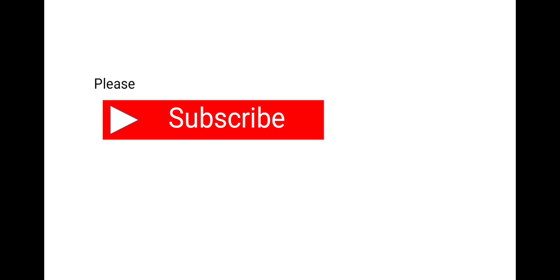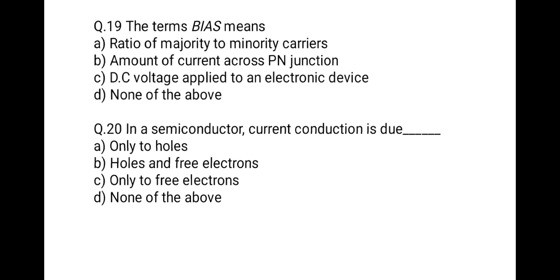The next question: in a semiconductor, current conduction is due to what? The correct option is holes and free electrons, because in a semiconductor both holes and free electrons are present.